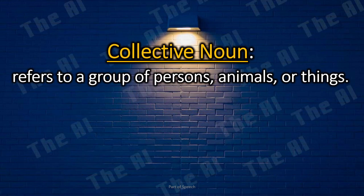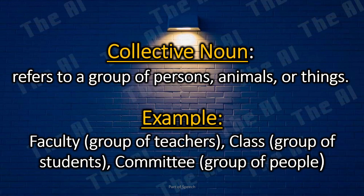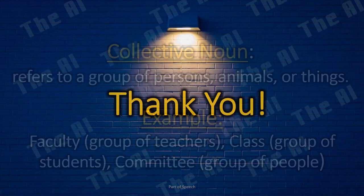Collective nouns refer to a group of persons, animals, or things. Examples: faculty — group of teachers; class — group of students; committee — group of people.